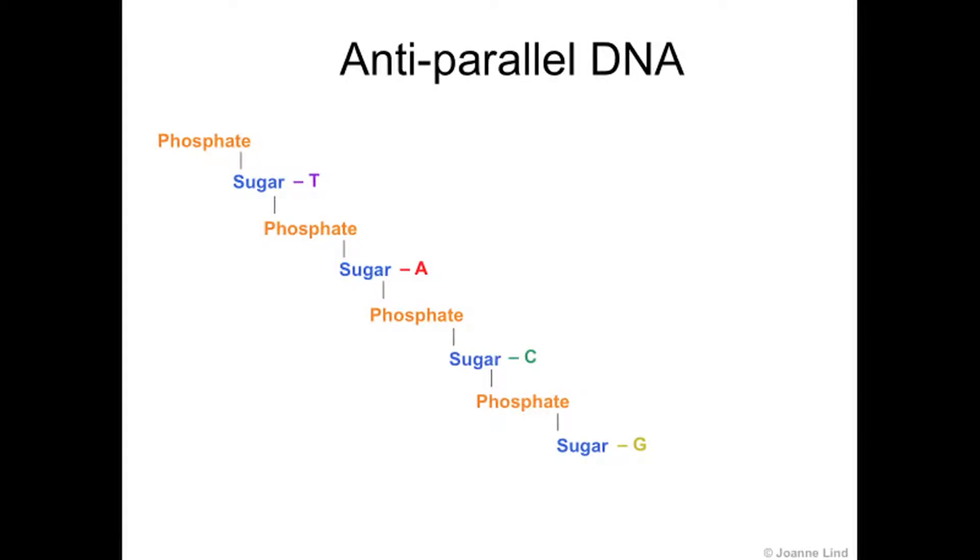This animation is about the anti-parallel nature of DNA. First, let's have a look at a single piece of DNA. It has a sugar phosphate backbone where four different possible bases are attached to. Nucleotide is another way of describing these bases.